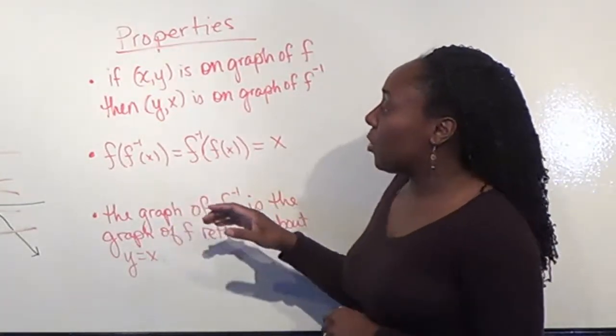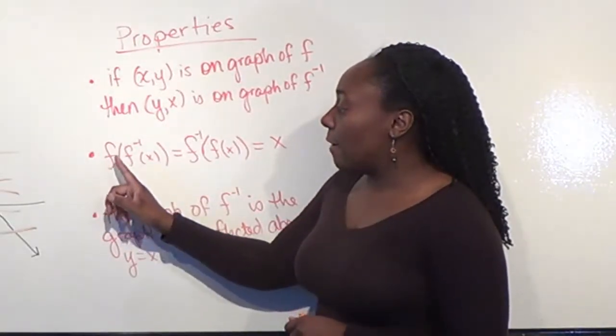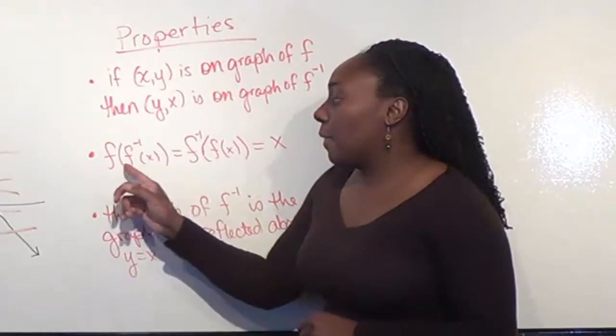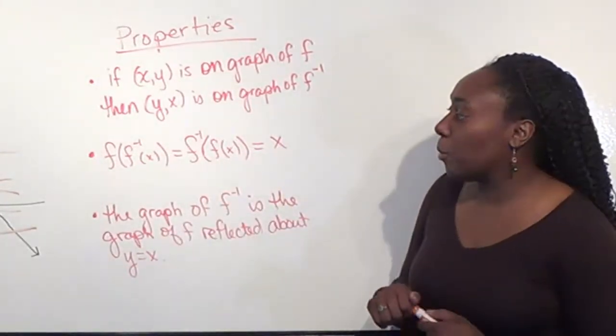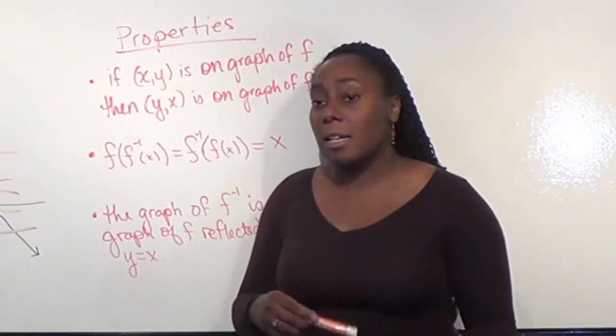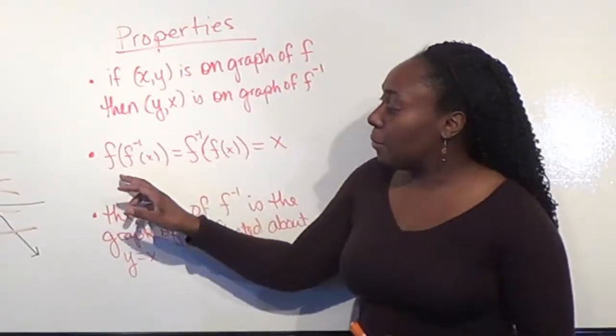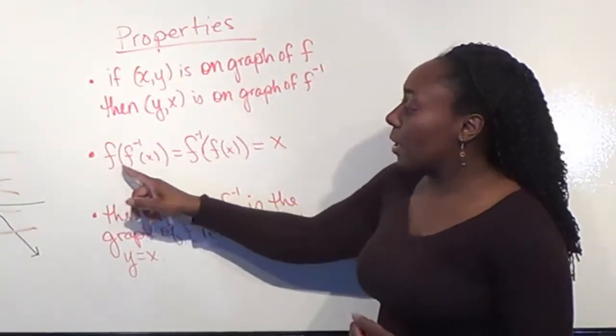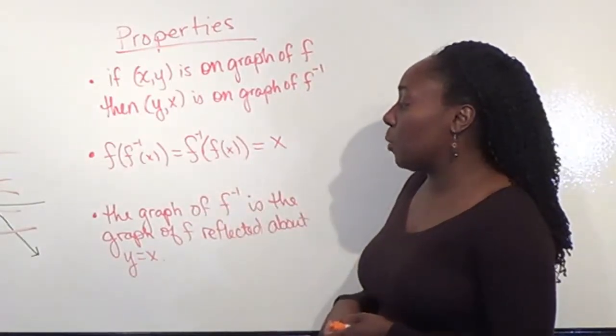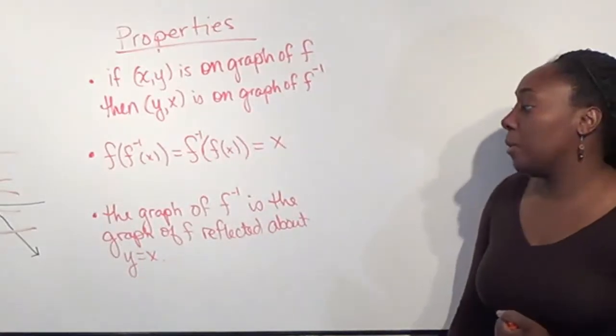Another property of inverses and their functions: if I take f and compose it with f inverse, then commutativity holds. If you remember when we talked about combinations of functions, f composed with g did not always equal g composed with f. However, if I'm looking at a function and its inverse, then f composed with f inverse is the same as f inverse composed with f. More importantly, it's always going to reduce down to the domain variable.